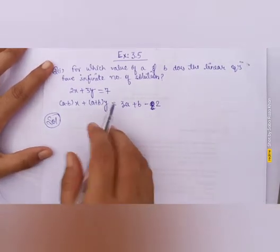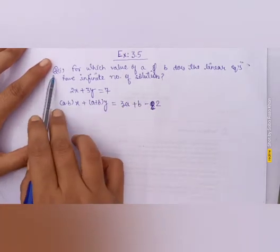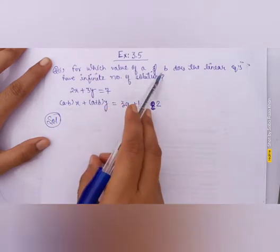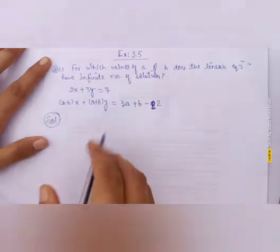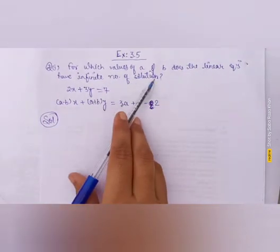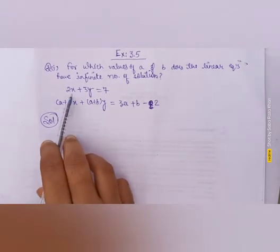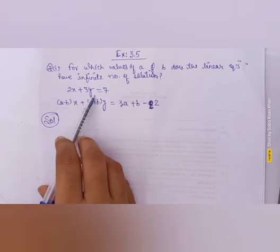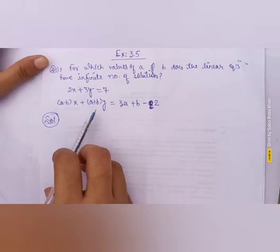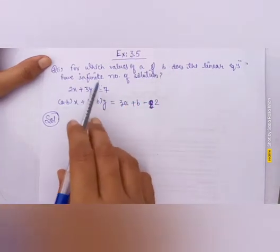Hello dear students, welcome back to your maths class. Today we are starting Exercise 3.5, and I am with Question 2, first part. The very first part of this question is: for which values of a and b does the pair of linear equations have an infinite number of solutions? In this pair of linear equations, x and y are given as variables, but the second equation has some terms with a and b. You need to find out the values of a and b for which these two linear equations have infinite solutions.